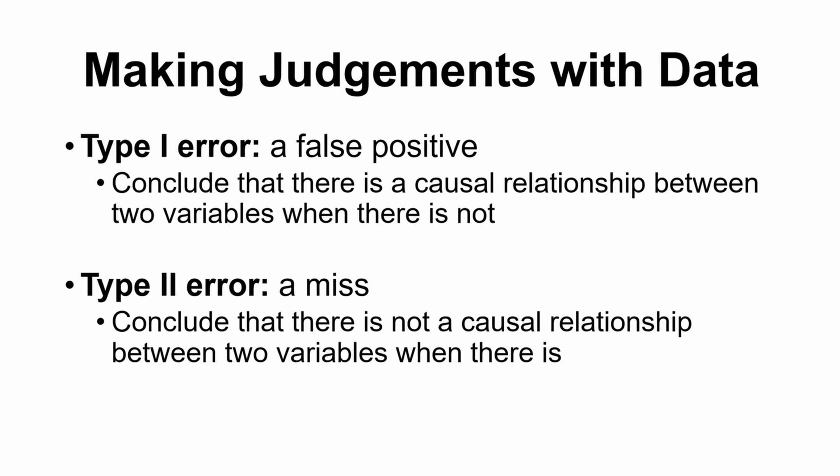I did mention error. Our p = 0.05 cutoff says that we would accept there being a 5% chance that we got this extreme value not because there's actually a relationship, but because there was a lot of variability — a lot of error in our data. So 5% of the time, you would end up with what we'd call a false positive, where we concluded that there is a causal relationship between our two variables, when in reality there wasn't — we just happened to get an extreme score due to chance. This is sometimes also called a Type 1 error.